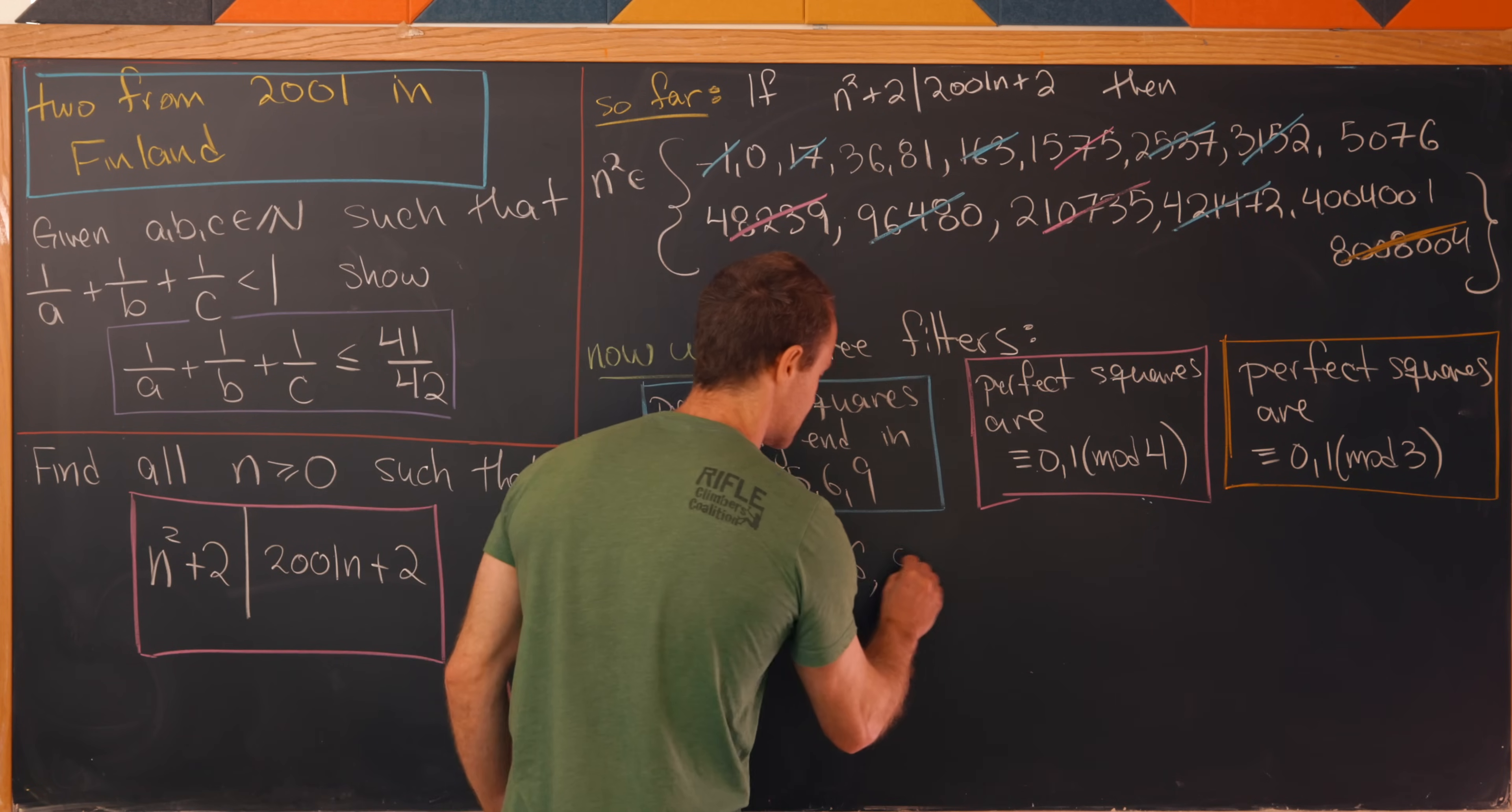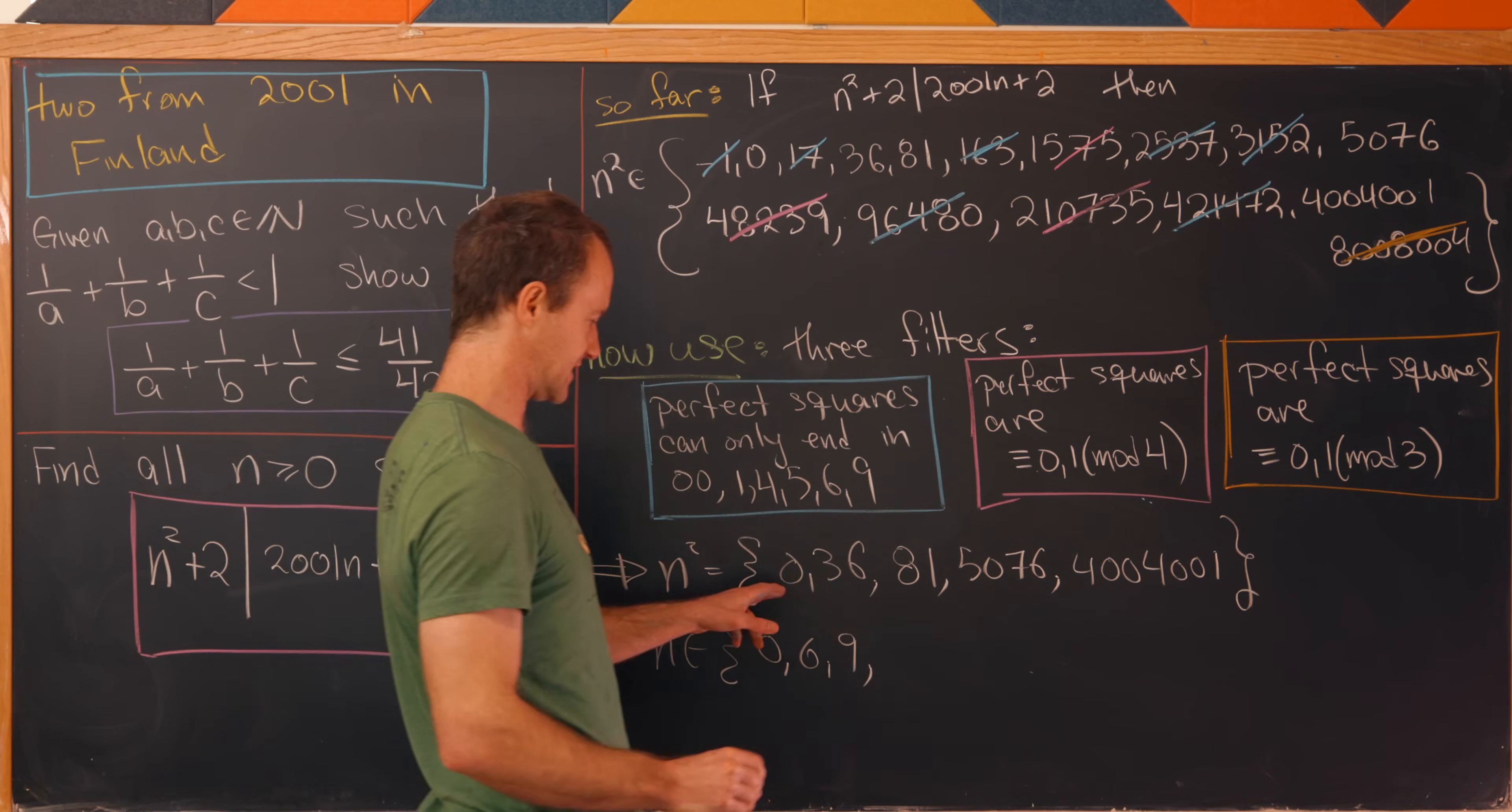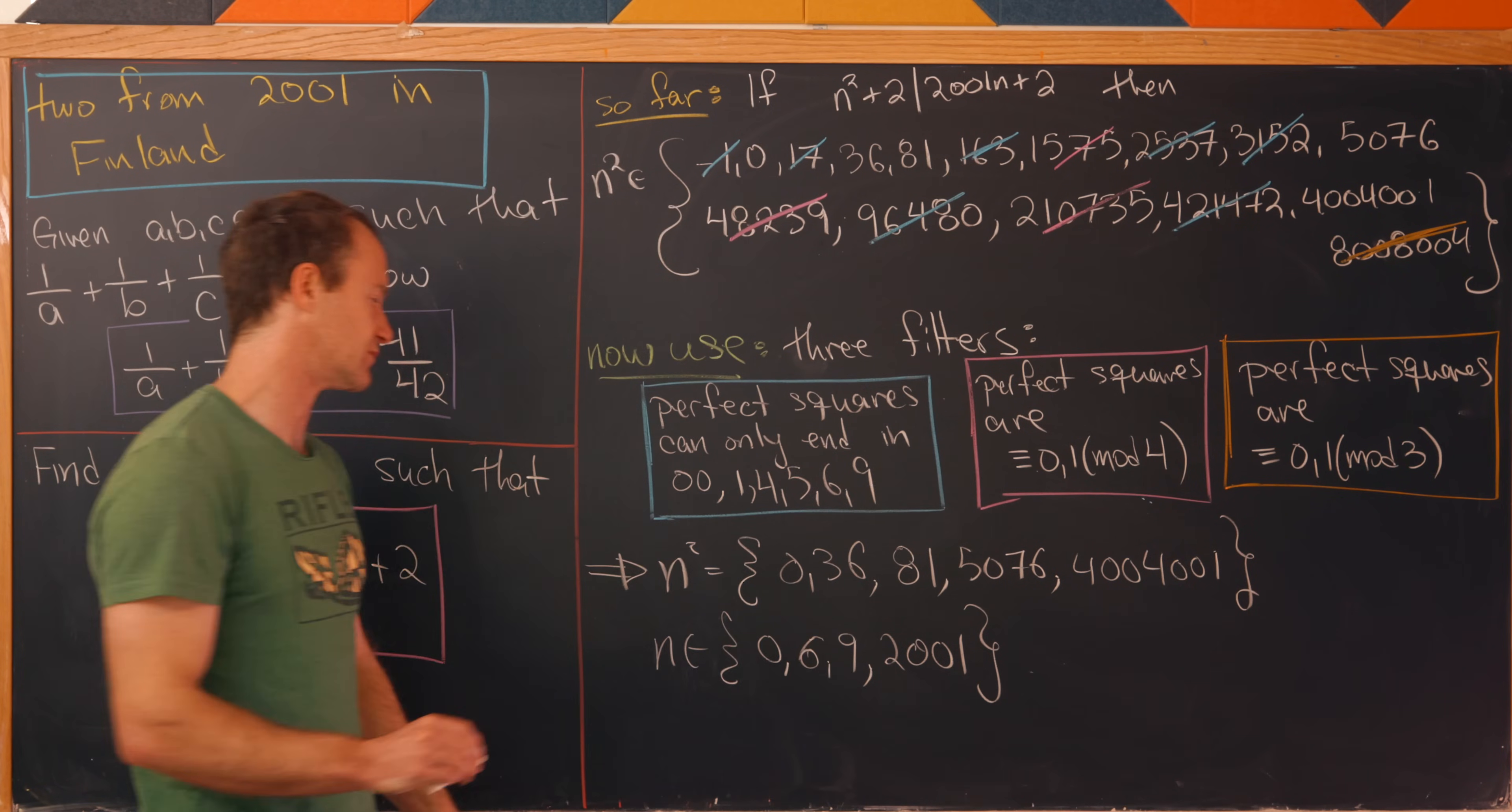So after this reduction, let's notice that we have n² is only from the following available subset. So 0, 36, 81, and then 5076, and then finally 4004001. And now we've got a set that's small enough so that we can just think about taking square roots. So notice that n comes from the set {0, 6, 9}, that's the square root of 0, 36, and 81. Then you can check that 5076 is not a perfect square, so that doesn't give us an available value of n. But 4004001 is a perfect square, and it's 2001², leaving us with the last possible value of n.